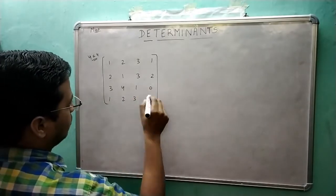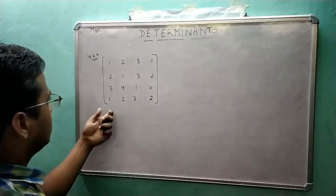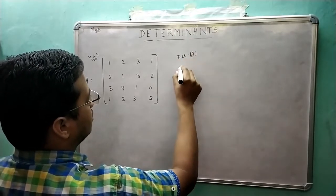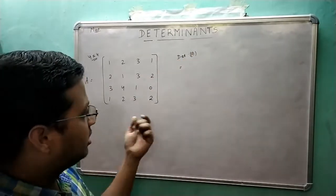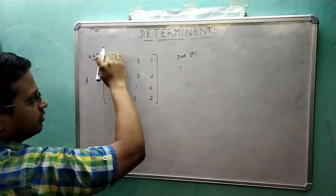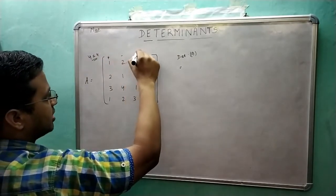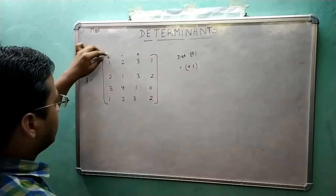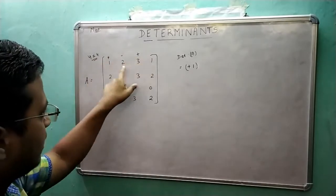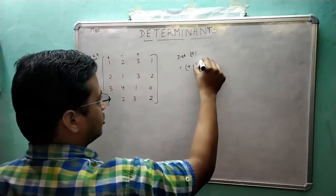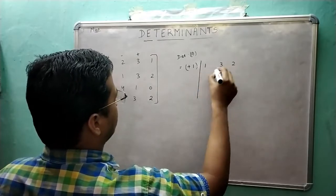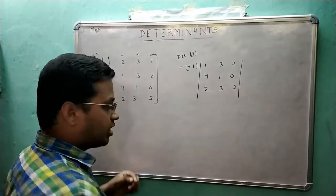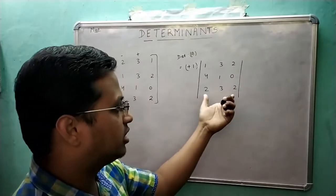If this is matrix A, then the determinant of A can be expanded from any row or any column. Let us expand from the first row. The signs are plus, minus, plus, minus. So: plus 1 into the determinant of the submatrix obtained by forgetting the first column and first row, which gives us the 3×3 determinant of 1 3 2 / 4 1 0 / 2 3 2. We have already discussed how to calculate the determinant of a 3×3 matrix.